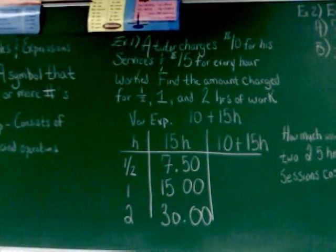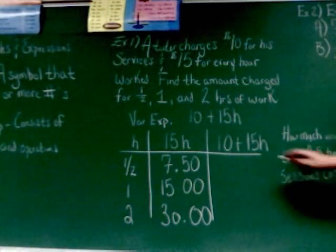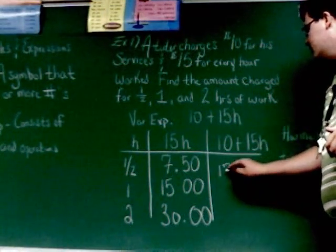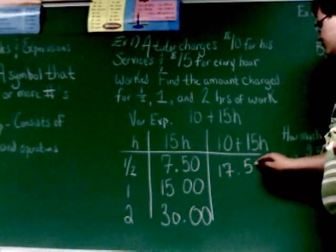So, add ten into the seven fifty for me. Seventeen. Seventeen fifty. So, if he tutors for a half hour, he makes seventeen dollars and fifty cents.